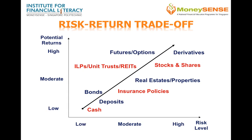Conversely, if you want higher returns, you must be prepared to bear more risks. The diagram shows that investment instruments can be ranked by their risk-return profile, starting with instruments that have both low expected return and low risk, such as cash and deposits, and moving through to those with higher expected returns but correspondingly higher risk, such as stocks and shares. You can invest to achieve a return on your money, and your decision boils down to considering the risk-return trade-off for each investment.